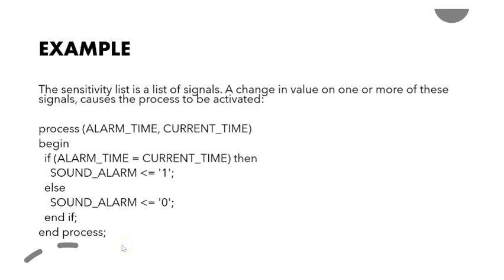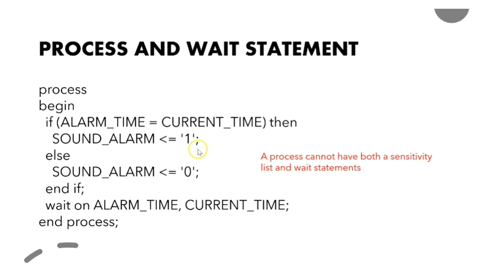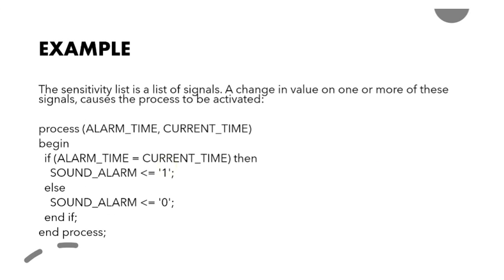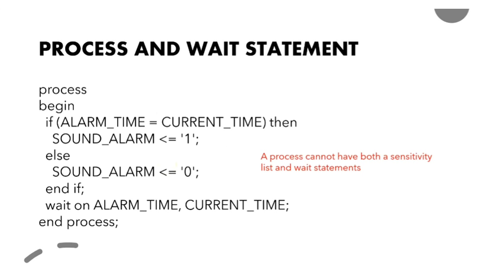This is how you write a process statement. Next, we discuss a process without a sensitivity list. A process statement cannot have both a sensitivity list and a wait statement. Here we use the wait statement, so there is no sensitivity list. The same alarm example is written using a wait statement: process, begin, if alarm_time equals current_time then sound_alarm equals 1, else sound_alarm equals 0.